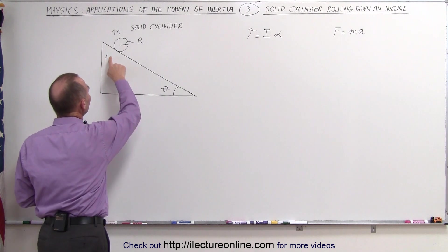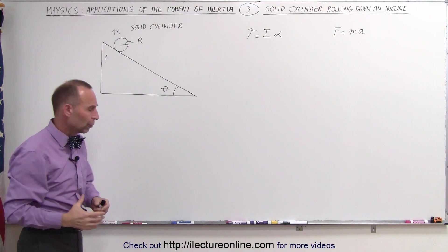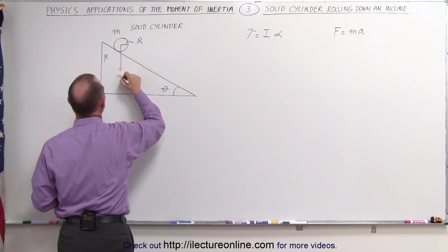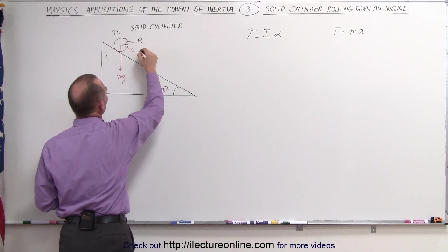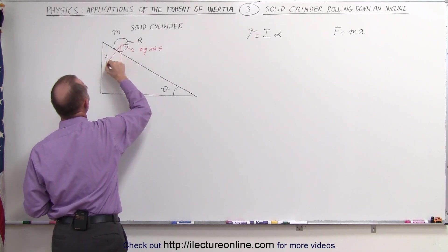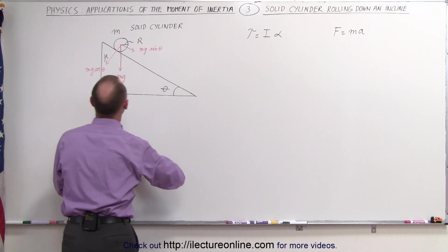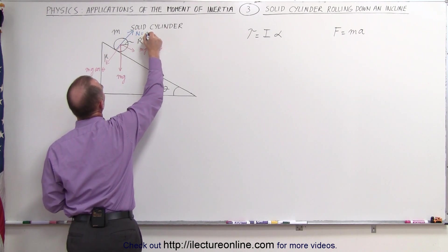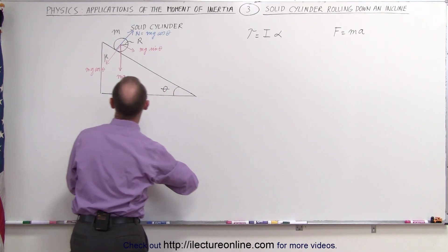The torque is caused by the friction between the surface and the rolling cylinder. Let's look at all the forces acting on this object. We have mg acting straight down — that's the weight of the cylinder. We have the component parallel to the surface, which is mg sine of theta, and then we have the perpendicular component, mg cosine of theta, which causes a normal force from the surface to act back. This is the normal force, which is also equal to mg times the cosine of theta, which then causes the friction force to act in this direction.